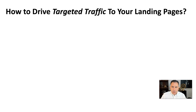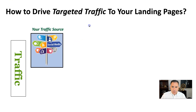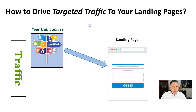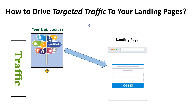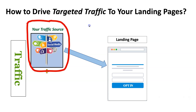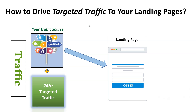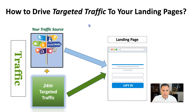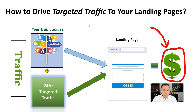How to drive targeted traffic to your landing page depends on what you are selling. You have two types of traffic — free and paid. Most people try to depend heavily on free traffic sent to the landing page, but this is not enough. Most free traffic comes from social media, which is slow. You want to enhance it by getting 24-hour targeted traffic to your landing page; by doing so, you are quadrupling your opt-ins, which usually translates into more money.